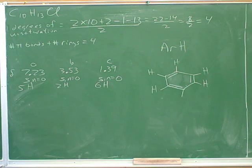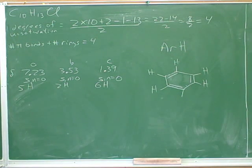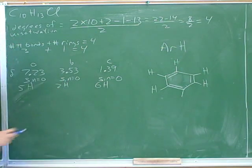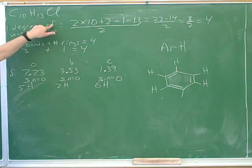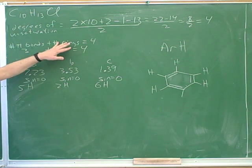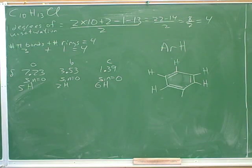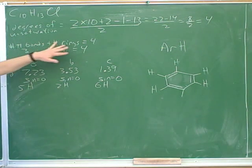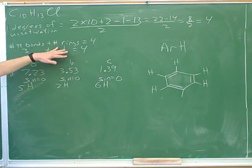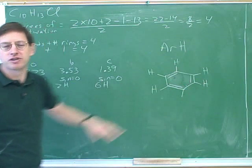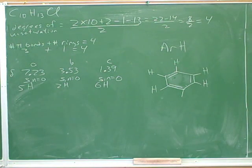Have we accounted for our degrees of unsaturation? We could have three more rings — let's take our time. How many pi bonds have we drawn in the benzene? Three. And how many rings? One. So we're done with our degrees of unsaturation. The degrees of unsaturation is the number of pi bonds plus the number of rings. That's why beforehand it was possible that we had zero pi bonds and four rings, or one pi bond and three rings, or two pi bonds and two rings, et cetera. But now we've really nailed it down — the benzene accounts for all four degrees of unsaturation. That's more confirmation that we were on the right track with the benzene ring. So we should not put in any more pi bonds or rings because we've already accounted for all of this.